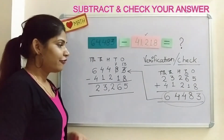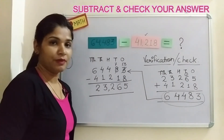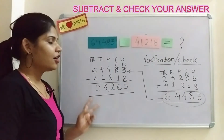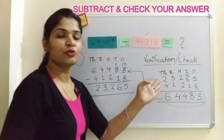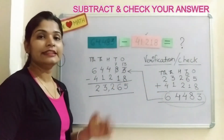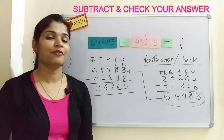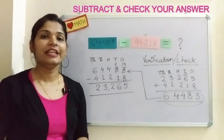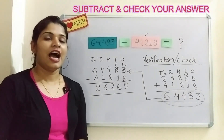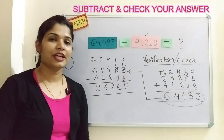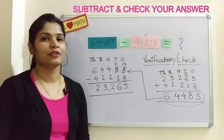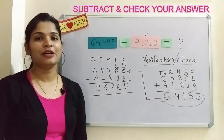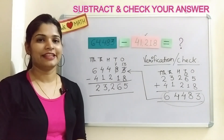If both numbers are the same, that means we have done our calculations correctly. If both numbers are different, then maybe we have made a mistake somewhere in the subtraction or the addition. This is how we can check our answers while performing subtraction questions. I hope, children, you like this trick — do check your answers this way! We will meet in the next video. Stay safe, stay at home. Bye bye, thank you!